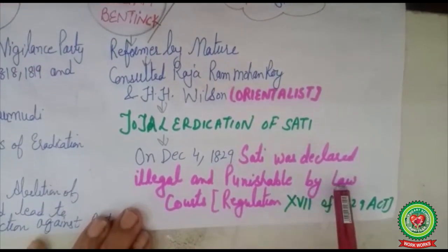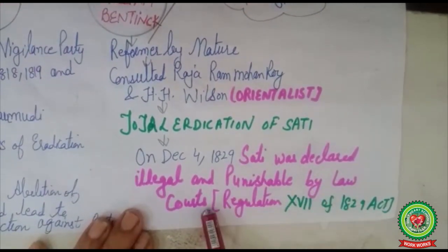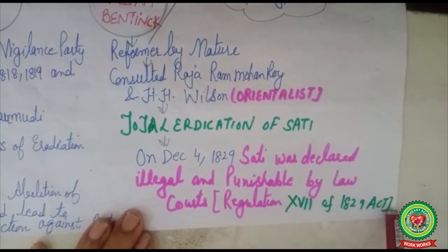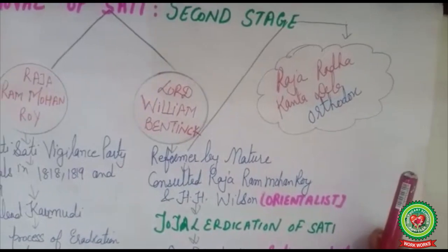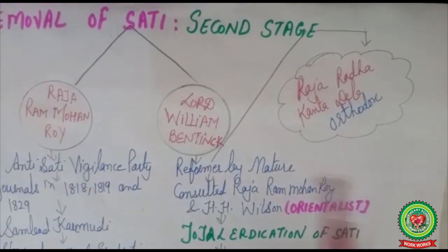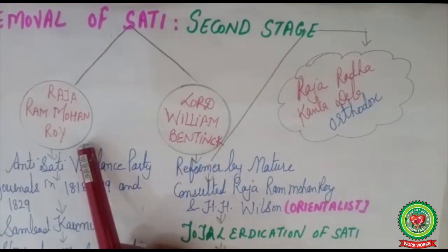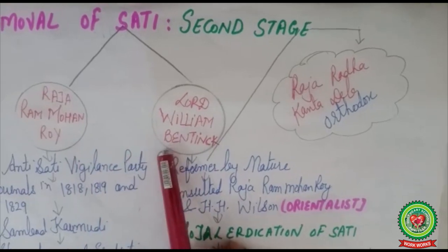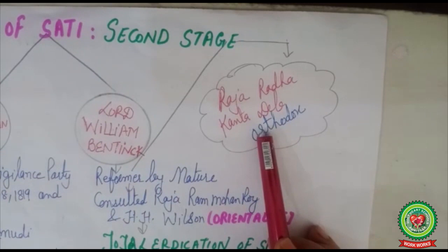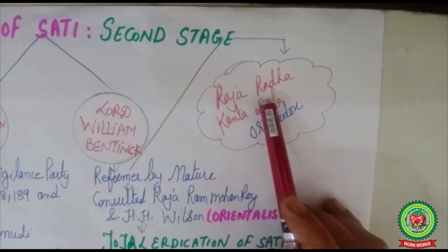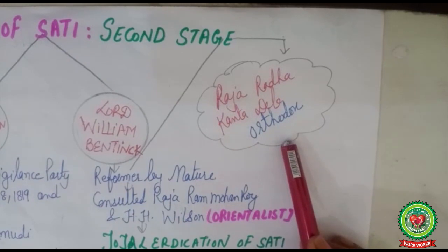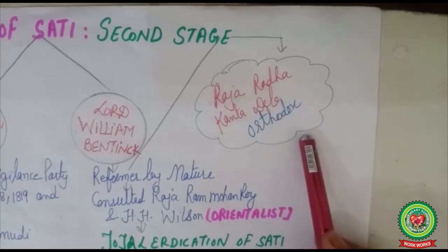Sati was declared illegal under Regulation 17 of the 1829 Act. However, when Raja Ram Mohan Roy and Lord William Bentinck were putting forward their efforts, there were some conservatives led by Raja Radha Kant Deb of Bengal who did not want the end of the sati system in India.